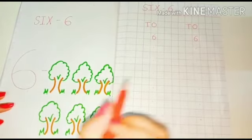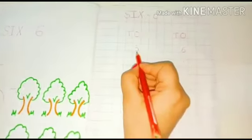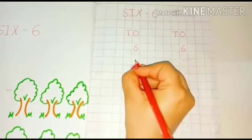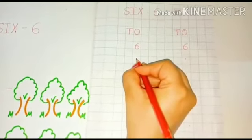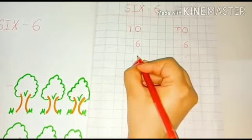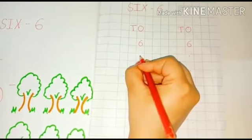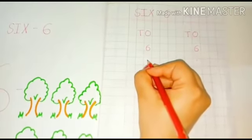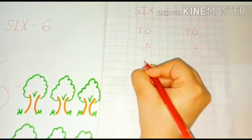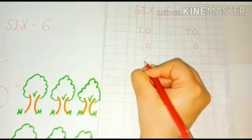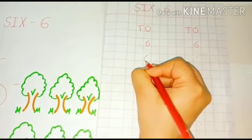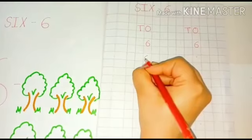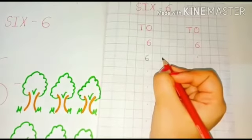To write the number 6, we will start at the top and do a curve line down to the bottom. And then we will go inside and make it round. Yes.